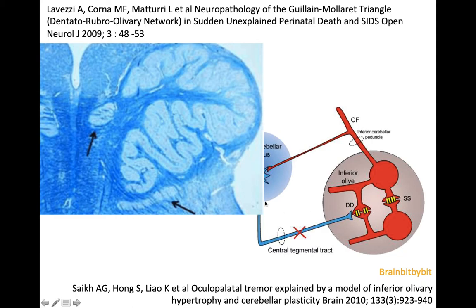As an illustration of a normal olivary nucleus — since a specific image of hypertrophic olivary degeneration was not available — this is a normal olivary nucleus in a two-month-old girl. You can see the medullary pyramid anteriorly, the inferior olivary nucleus which is quite large, and the two accessory nuclei: the dorsal and medial accessory olivary nuclei.